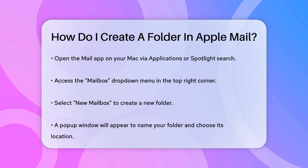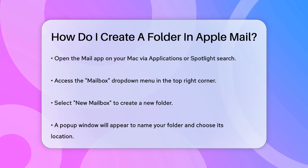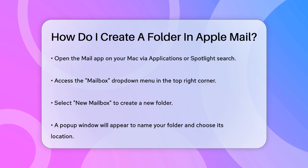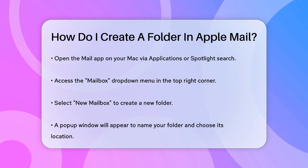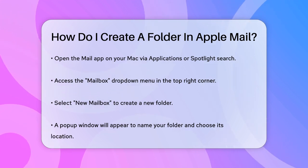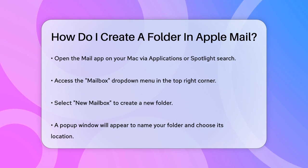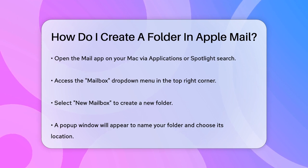First, you need to open your Mail app. On your Mac, you can find this in your Applications folder or through Spotlight Search. Once you're in the Mail app, look at the top right corner of the screen and select the Mailbox drop-down menu.